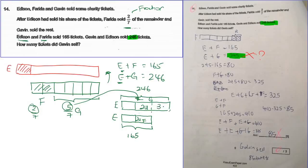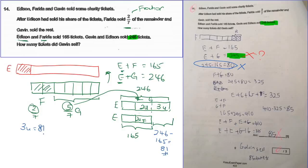The whole thing is 5 units, so this portion here is clearly 3 units. Now, 246 minus 165 gives you 81 — so 3 units equals 81. If three units equals 81, then one unit equals 81 divided by 3. This person here has five units.